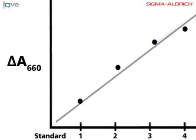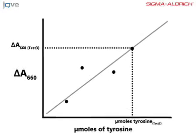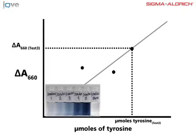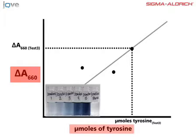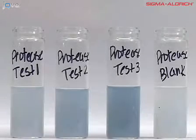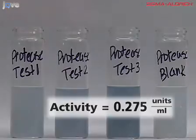Absorbance values generated by the activity of the protease are compared to a standard curve, which is generated by reacting known quantities of tyrosine with the FC reagent to correlate changes in absorbance with the amount of tyrosine in micromoles. From the standard curve, the activity of protease samples can be determined in terms of units, which is the amount of micromoles of tyrosine equivalence released from casein per minute.